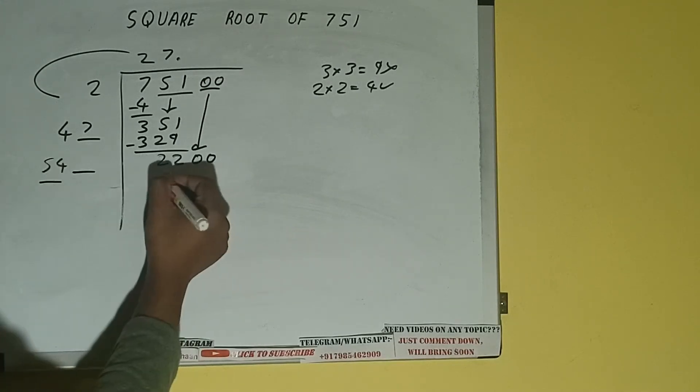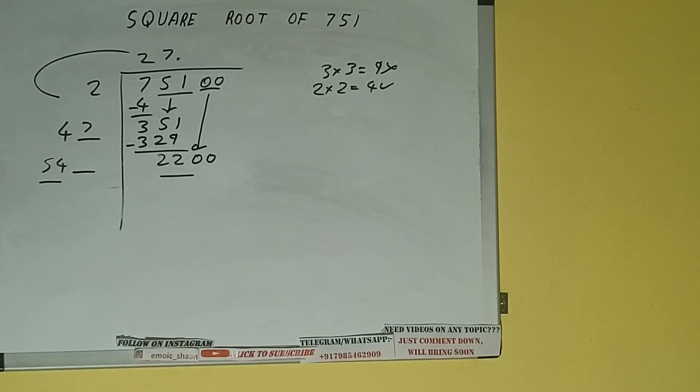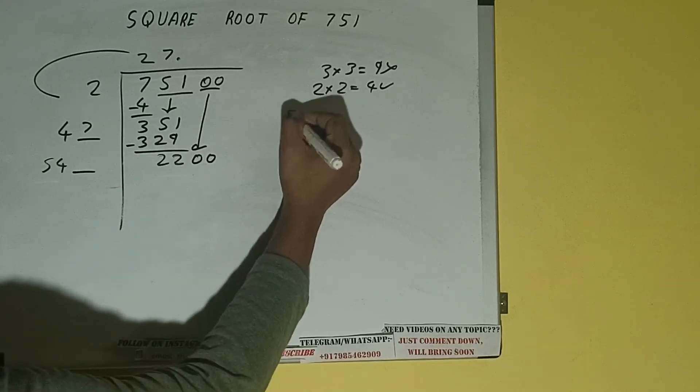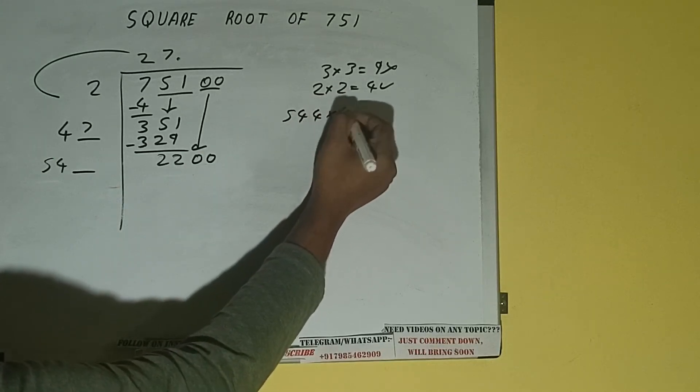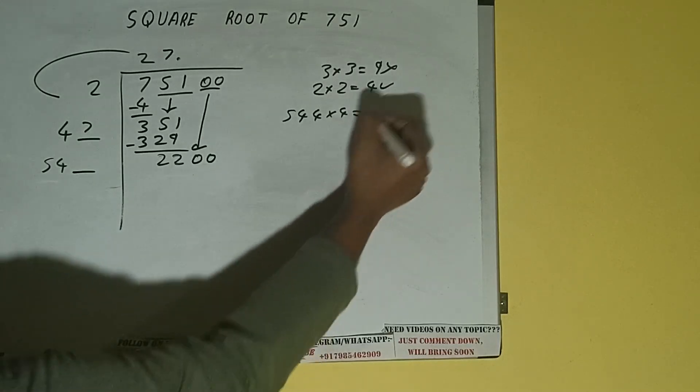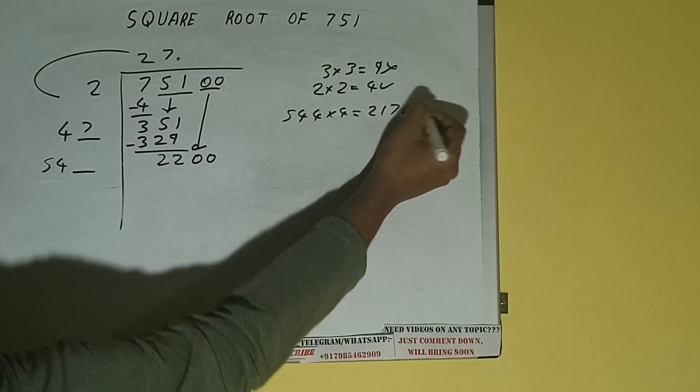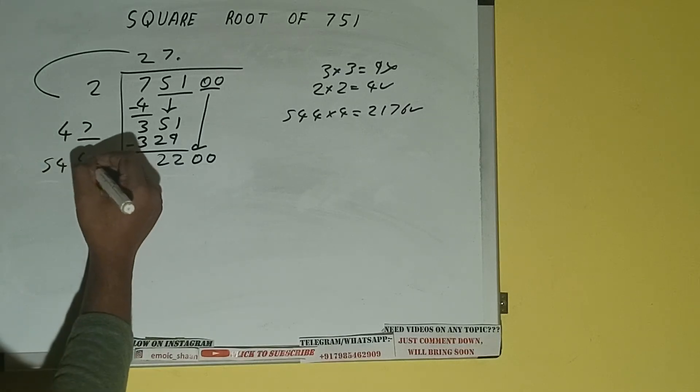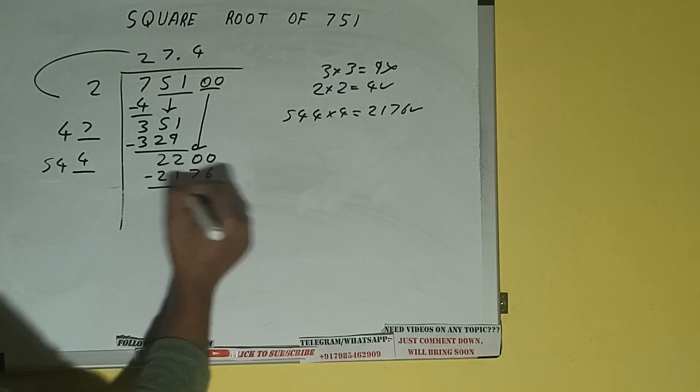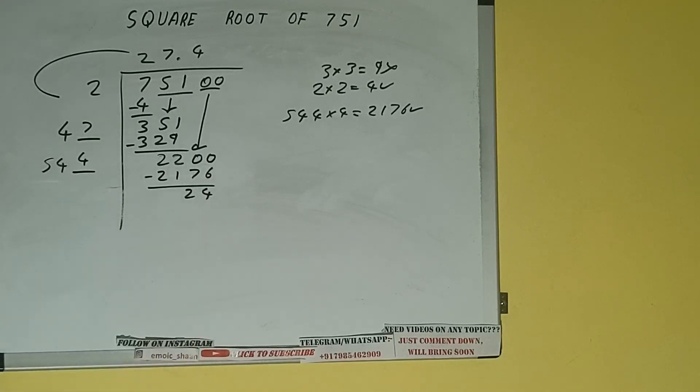Compare 544 and 2200. 544 times 4 is 2176. So we can try 4. And we will have 2176, which is good to take. So 4 here and 4 here. 2176 subtract, 24 will be left.